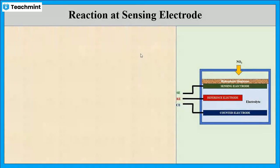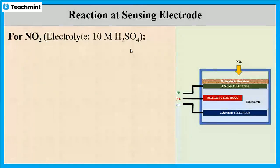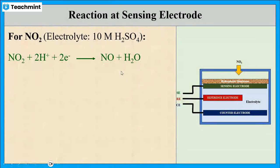In the case of detection of nitrogen dioxide, 10 molar sulfuric acid is used as electrolyte. In this case, nitrogen dioxide gets reduced to nitrogen oxide by reacting with the working electrode. And this is the reduction reaction where the nitrogen dioxide is reduced to nitrogen oxide by the addition of electrons.